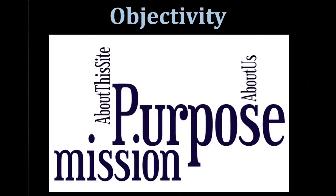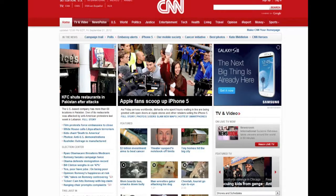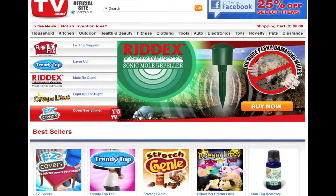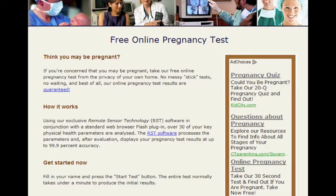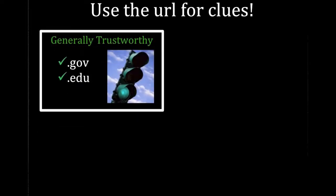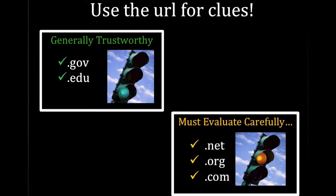Checking for objectivity starts with determining the purpose or mission of the site. Is the purpose of the site to inform, persuade, entertain, sell, or is it just a hoax? The URL or web address itself can also help you. The most trustworthy sites are the ones that end in .gov or .edu. Those to be cautious of include ones that end in .net, .org, or .com.